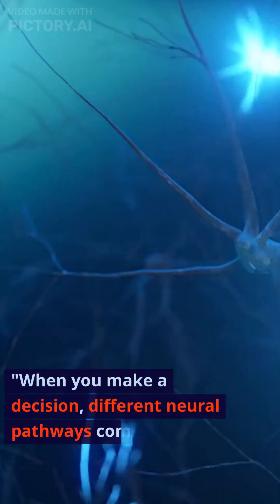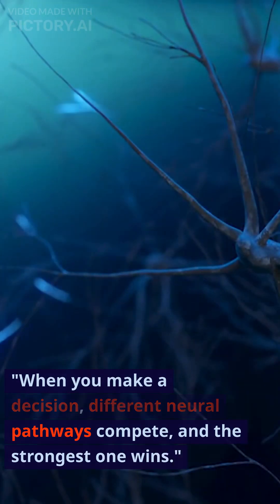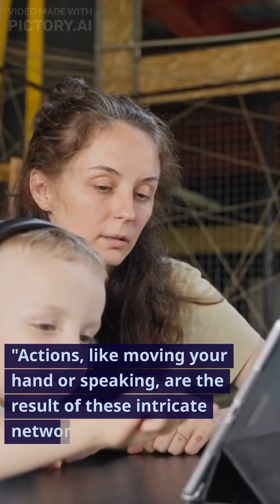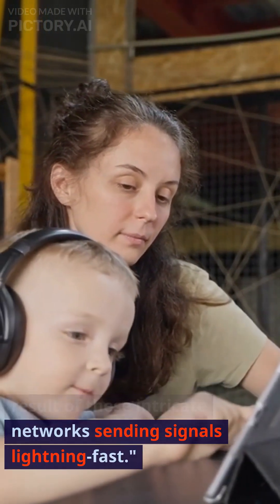When you make a decision, different neural pathways compete, and the strongest one wins. Actions, like moving your hand or speaking, are the result of these intricate networks sending signals lightning fast.